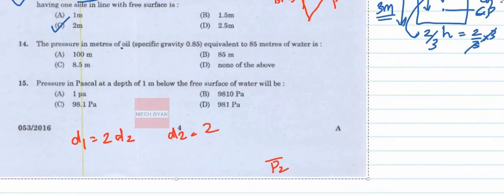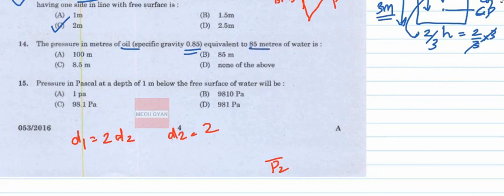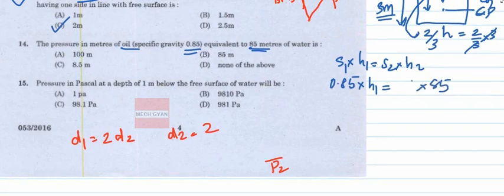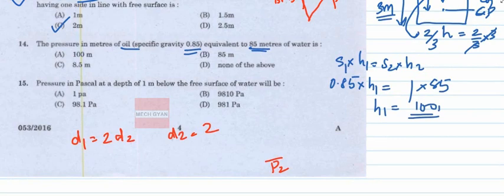Question 14: The pressure in meters of oil with specific gravity 0.85 equivalent to 85 meters of water. Using S1 × H1 = S2 × H2, where S_oil = 0.85 and H_water = 85 meters, S_water = 1. Substituting: 0.85 × H_oil = 1 × 85, giving H_oil = 100 meters.